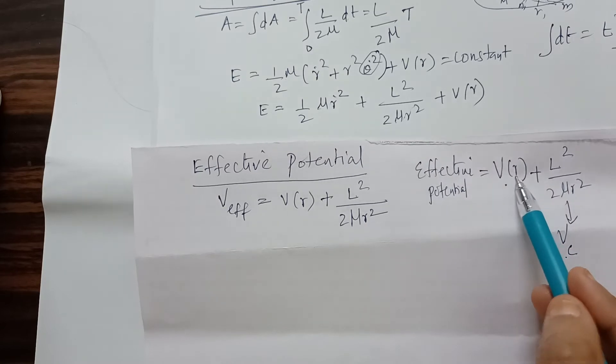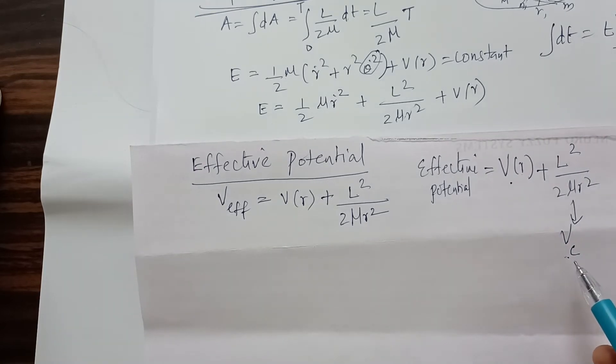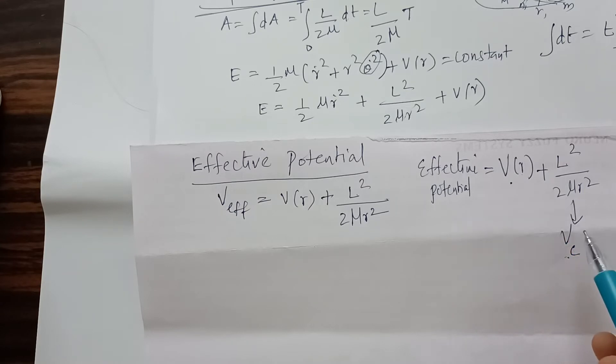The effective potential is the sum of the real potential and the centrifugal potential, where the centrifugal potential is L² / (2μr²).